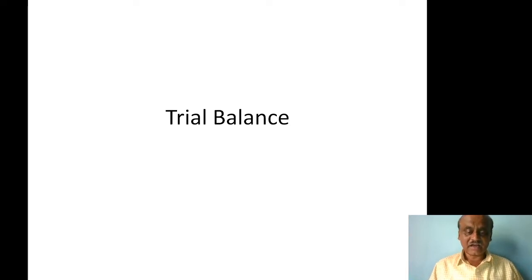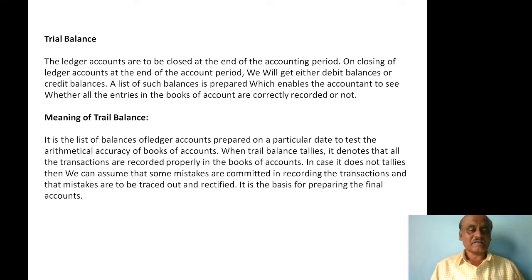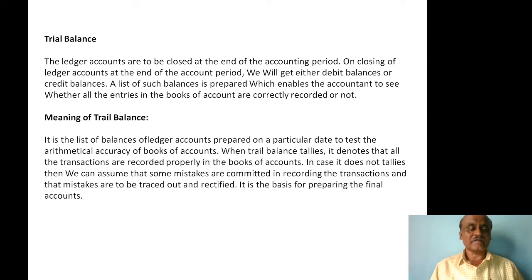The ledger accounts are to be closed at the end of the accounting period. After posting the journal entries to the ledger accounts, all the ledger accounts are to be closed. On closing the ledger accounts, we may get a debit balance or a credit balance. Such a list of balances of ledger accounts is called the trial balance. This list or trial balance enables the accountant to see whether all the entries in the books of accounts are correctly recorded or not.